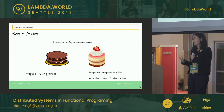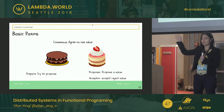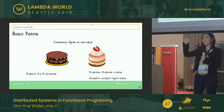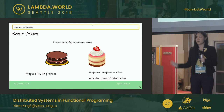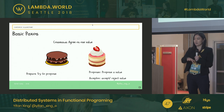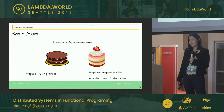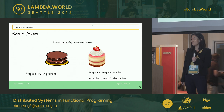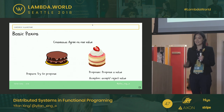Usually what happens is someone will say, have we decided on which flavor to pick yet? And some other person will say no, we haven't decided yet. And the original proposer will say, well, let's just go for cheesecake. And then the group will say, sure, let's go for cheesecake. And that is Paxos.